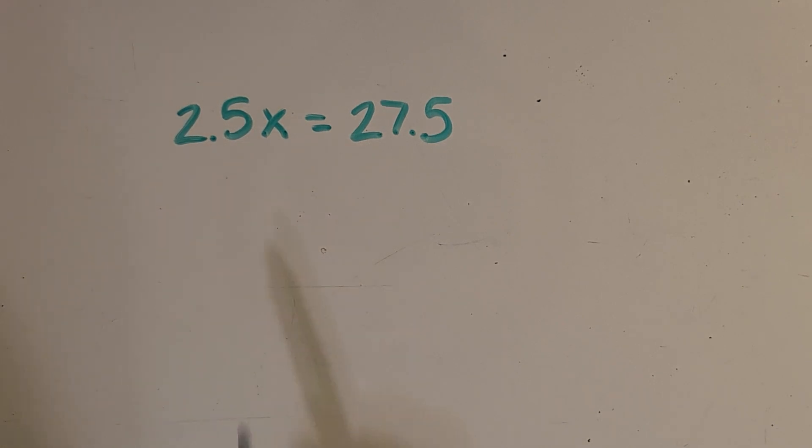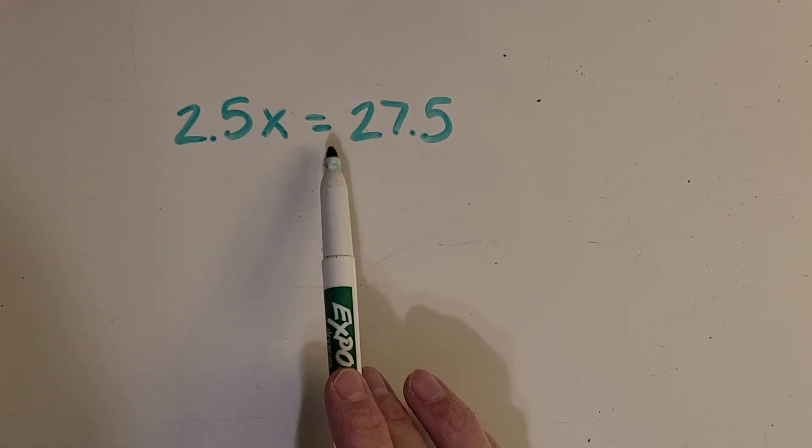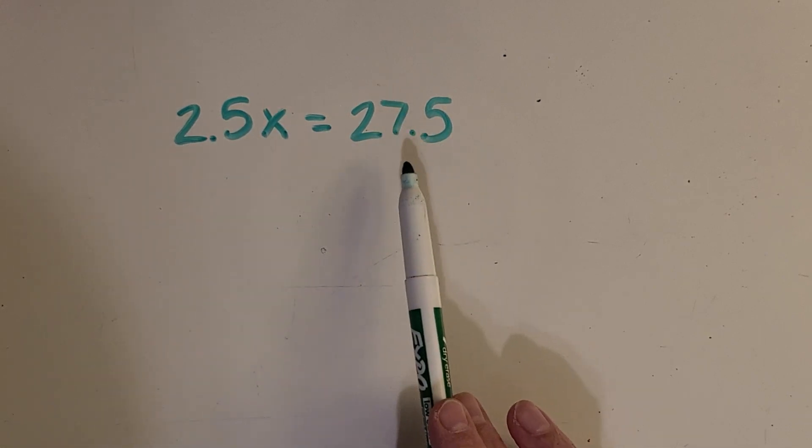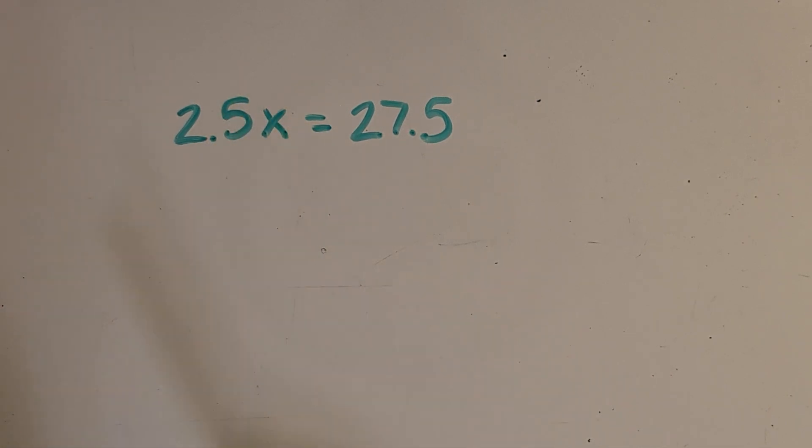Here's our second example. So now I've got 2.5x, so that's my variable, equals 27.5. So what does it mean when I have a number bumped up next to a variable? What operation are we doing there?